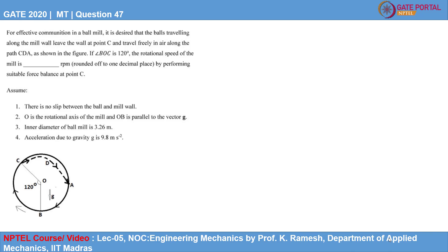For effective communication in a ball mill, it is desired that the balls travelling along the mill leave the wall at point C and travel freely in air along path CDA as shown in the figure.